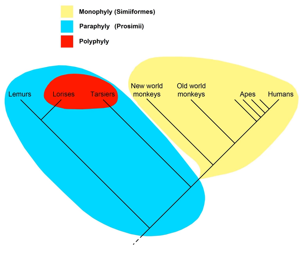The term polyphyly, or polyphyletic, derives from the two ancient Greek words polys, meaning many or a lot of, and phylon, meaning genus or species, and refers to the fact that a polyphyletic group includes organisms arising from multiple ancestral sources.